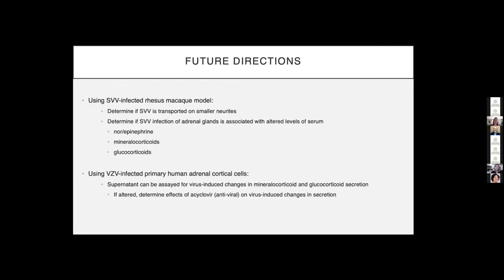In the future, we would want to take the SVV-infected rhesus macaque tissue and determine if SVV is transported on smaller neurites. In both the SVV and VZV portions of the study, we would want to look at serum and supernatant levels of different hormones to determine whether there are virus-induced changes in mineralocorticoid and glucocorticoid secretion, and then evaluate the effects of acyclovir, an antiviral, on virus-induced changes in secretion.